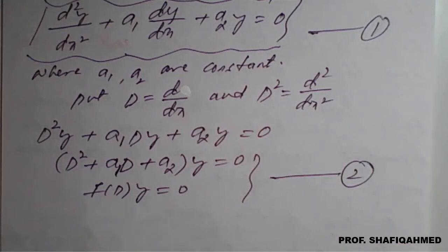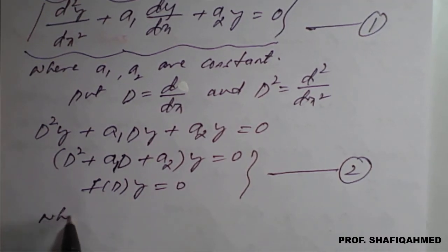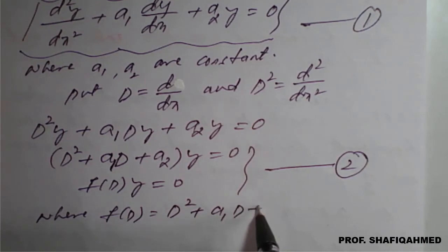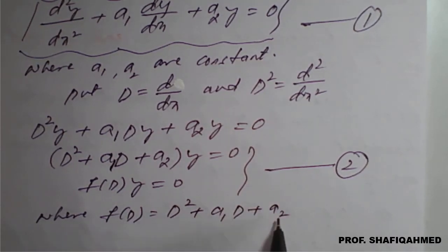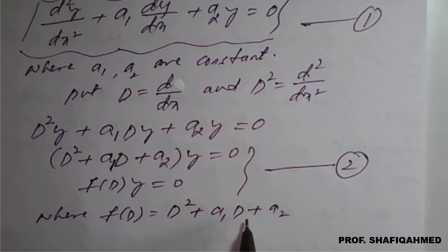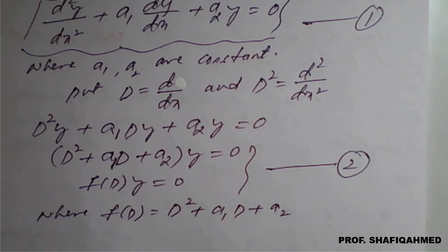We give this equation number 2. From equation number 2, we need to find the solution. We know that f(D) is nothing but the bracket: D squared plus a1 D plus a2. This is actually in the form of a quadratic equation. For a second order differential equation, it will be a second order or quadratic equation, and we need to find roots from it using the auxiliary equation.